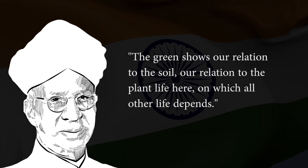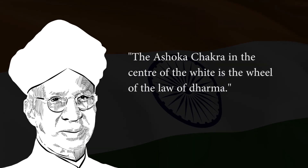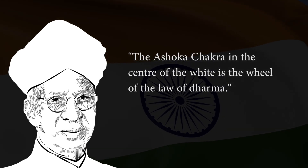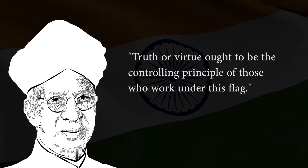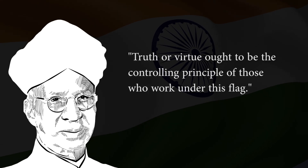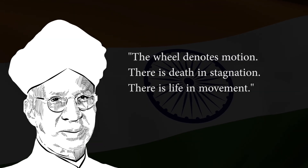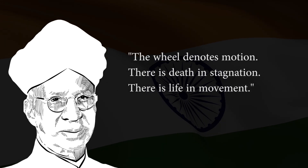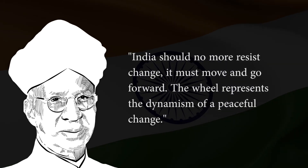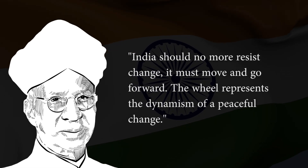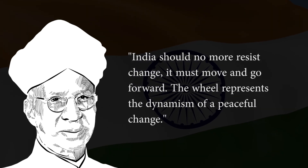The green shows our relation to the soil, our relation to the plant life here on which all other life depends. The Ashoka chakra in the center of the white is the wheel of the law of dharma. Truth or virtue ought to be the controlling principle of those who work under this flag. The wheel denotes motion — there is death in stagnation, there is life in movement. India should no more resist change; it must move and go forward. The wheel represents the dynamism of a peaceful change.